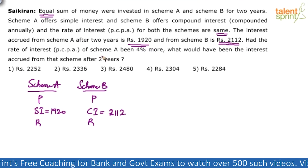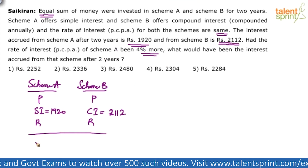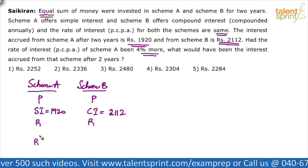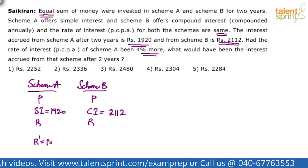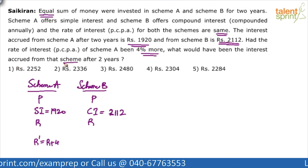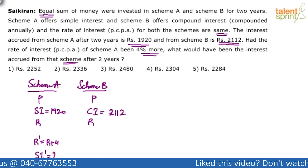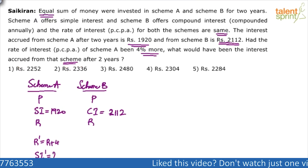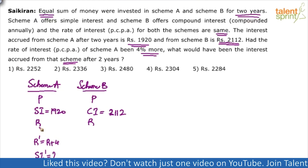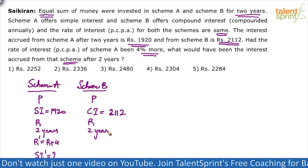Had the rate of interest of Scheme A been four percentage more — that means there is a new case. In Scheme A, if the rate of interest is four percentage more, there is a new rate R dash, where R dash equals R plus 4. Then what would have been the interest accrued from that scheme after two years? Both schemes ran for two years, so the time period is the same.